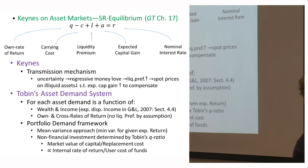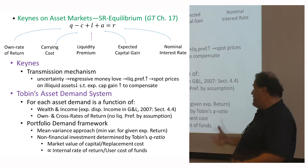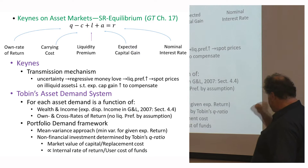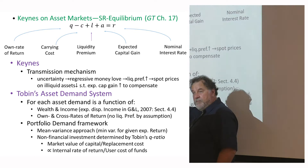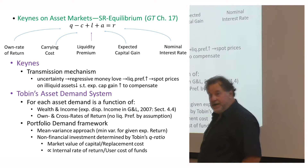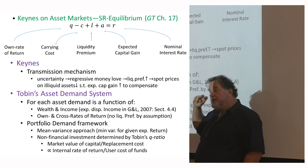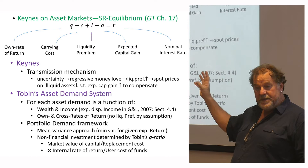Moving to James Tobin, we have asset demand — money, bonds, equities — as a function of wealth and income. The own rates of return are: zero on money, the interest rate on bonds, and the return on equity. And we have cross rates of return, so demand for equity is a function not just of the return on equity but also returns on competing assets — bonds and money.